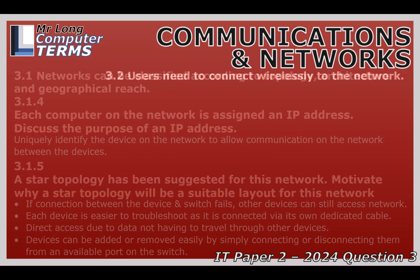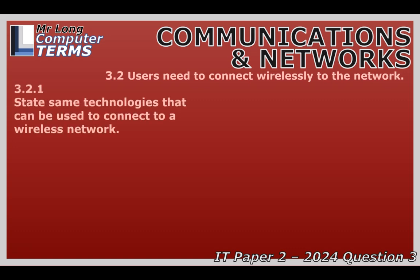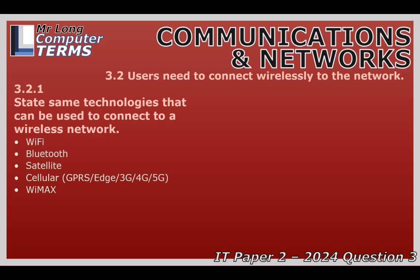Now let's talk wireless connections — we're not always plugging in cables anymore. The big one everyone knows is Wi-Fi, the standard for home and office internet. Then there's Bluetooth for really short distances — connecting headphones, speakers, or a mouse. For more remote areas, especially rural ones, satellite internet is an option. And of course cellular: GPRS, Edge, 3G, 4G, and now 5G — the backbone for mobile devices, always getting faster and handling more data for text, calls, video, everything on the go. There was also WiMAX, less common now, which aimed for citywide wireless internet.